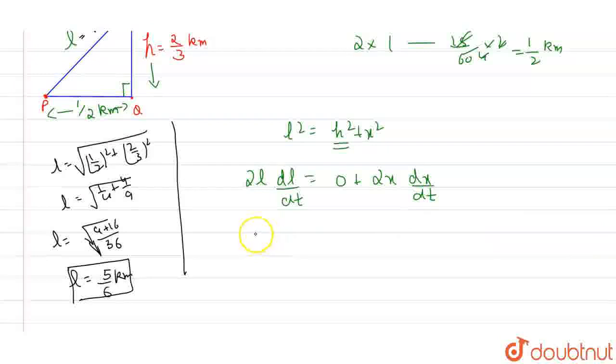So we have to find dl by dt. This will become 0, so this is 2l dl by dt equals 2x dx by dt. This 2 will cancel out with each other, we are left with l.